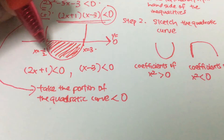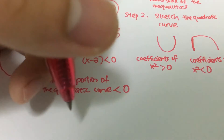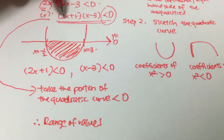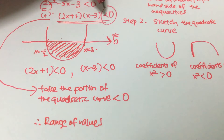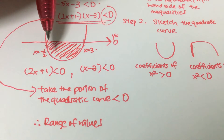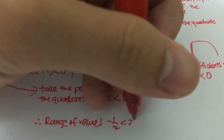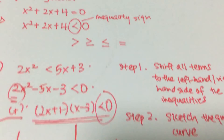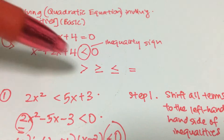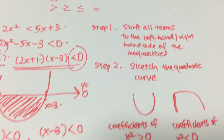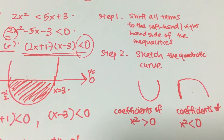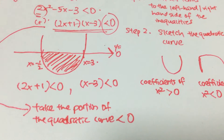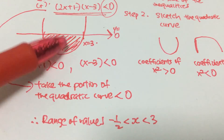So hence, we can use this to state the conclusion: the range of values in which the quadratic curve is below the x-axis — where y equals zero — is between negative one half and 3. That's it for the basics of solving the quadratic equation using inequalities. First, we identified the quadratic equation and the inequalities, then shifted terms to the left-hand side, sketched the curve, found the portion below zero, and calculated the range of values.